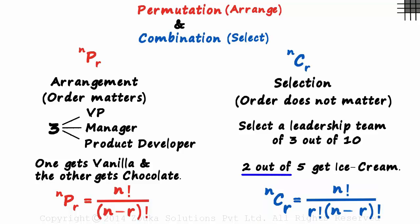If we have to select 2 out of 5, the number of ways in which it can be done is 5 factorial, divided by 2 factorial times 5 minus 2 factorial.